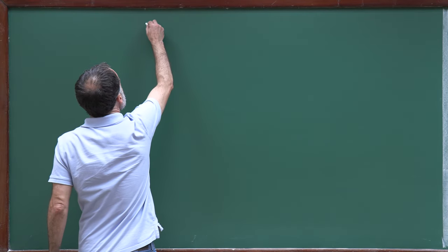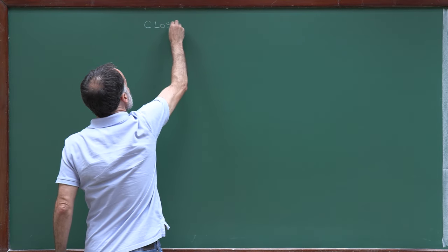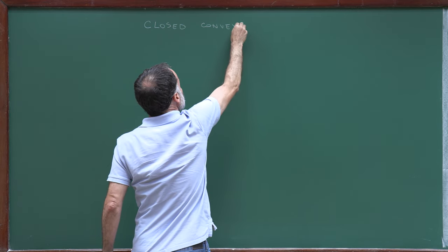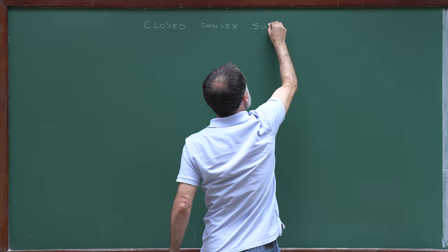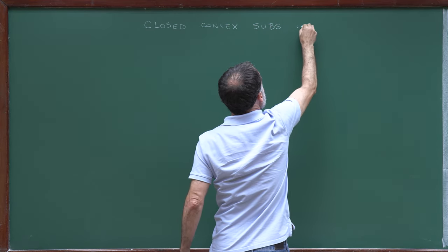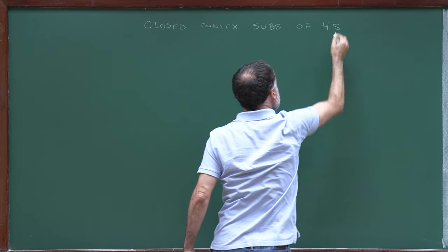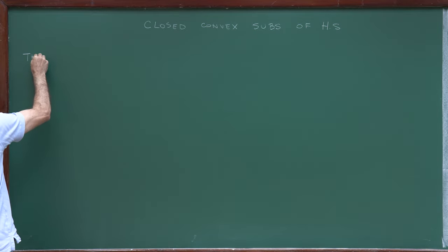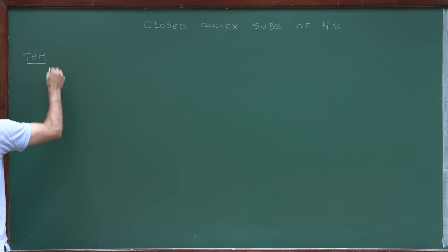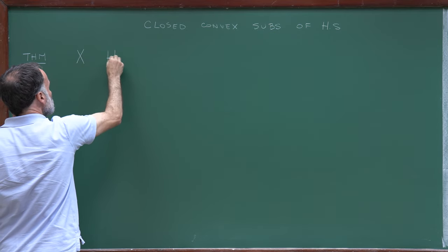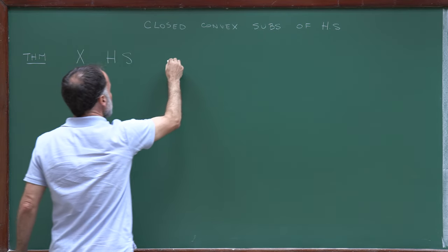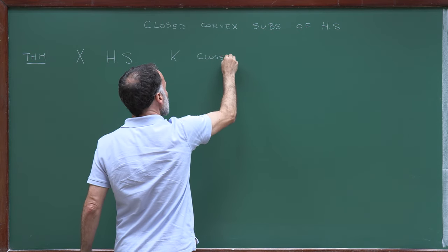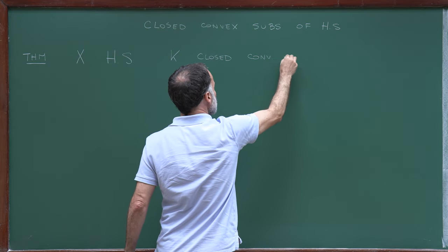In this lecture, I will discuss closed convex subsets of a Hilbert space. Let's start with a theorem. So X is a Hilbert space, and we have K, a closed convex subset.